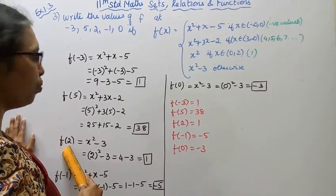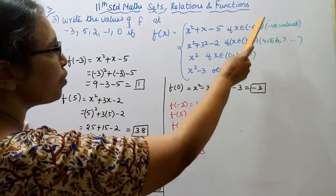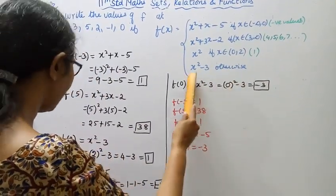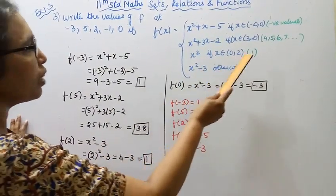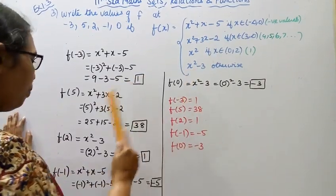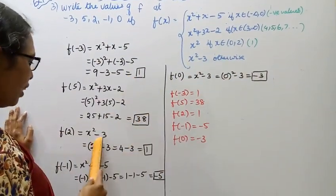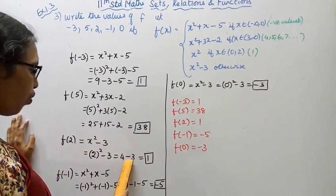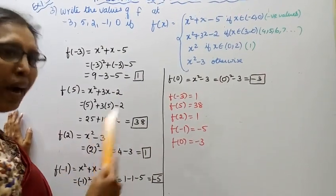f of 2: checking which interval 2 falls in — 2 does not belong to the first or second intervals, so we use the otherwise case: x squared minus 3. Substituting x equals 2: 2 squared minus 3 equals 4 minus 3 equals 1.